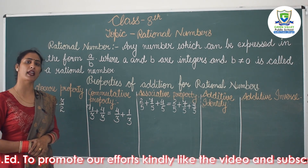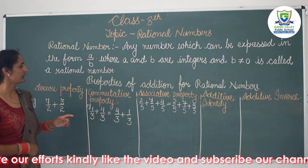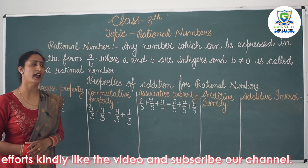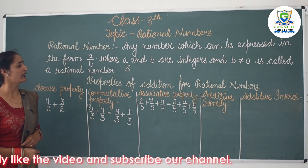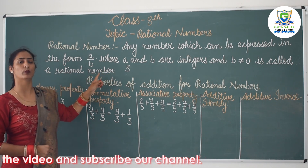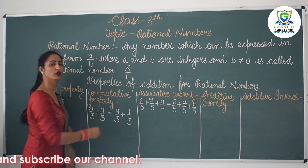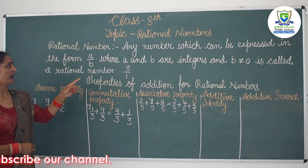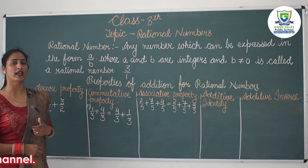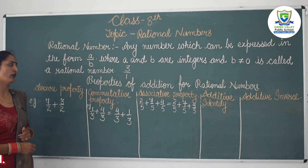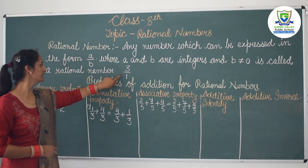So a and b can be any integer: 1, 2, 3, and so on. If we have a simpler number, for example the number 3, we can convert it into a rational number by putting 1 in the denominator. So any integer like 1, 2, 3, 4, 5 and so on can be expressed in the form of a rational number by writing it over 1.